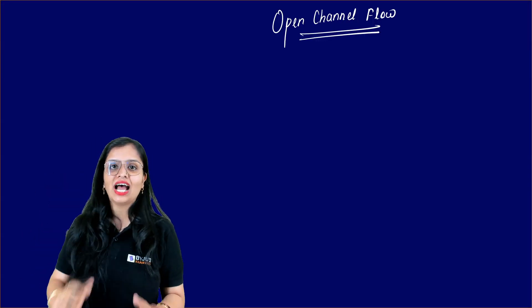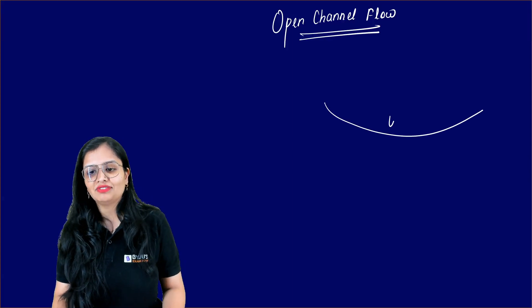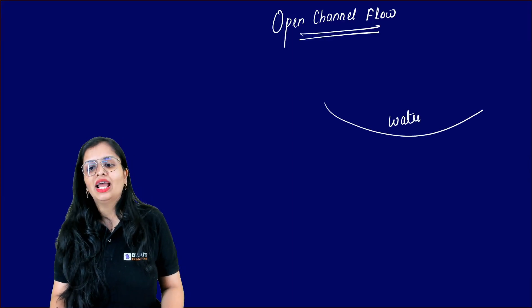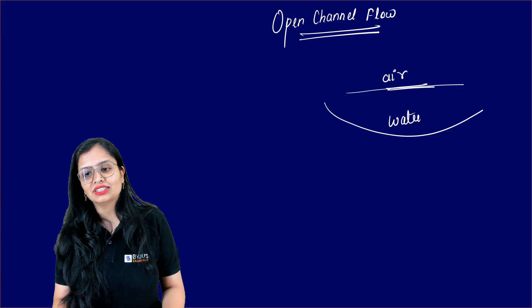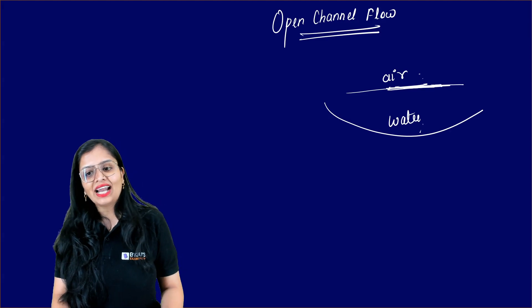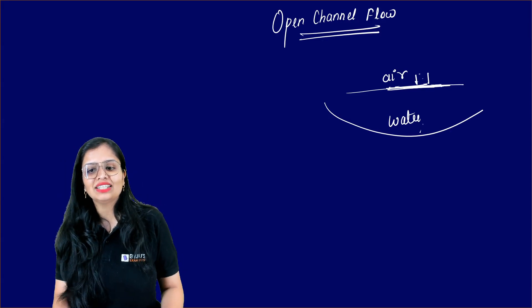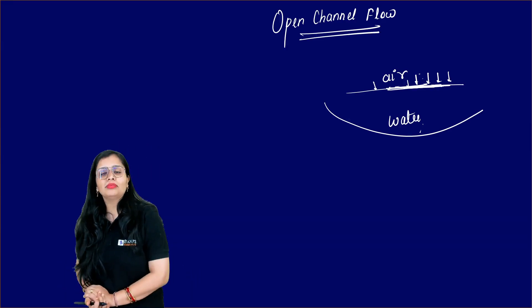And what is happening? The other fluid is applying pressure at constant atmosphere. Like, for example, in our case, if this is water, water is a fluid and air is also a fluid, so it has a free surface. At the interface of the fluid, one fluid is exerting pressure onto the other fluid.